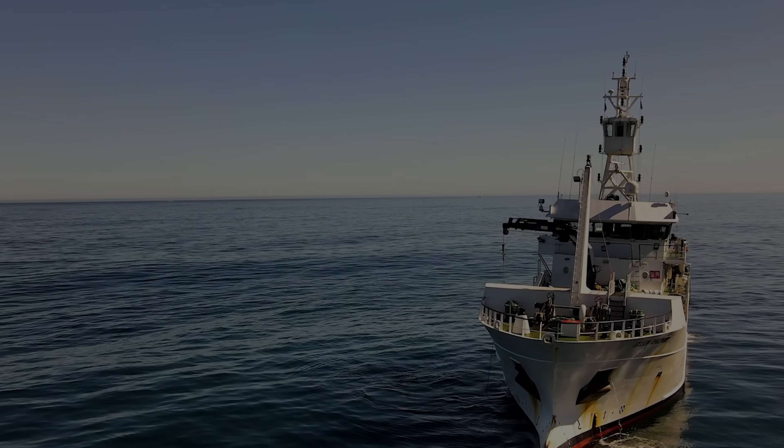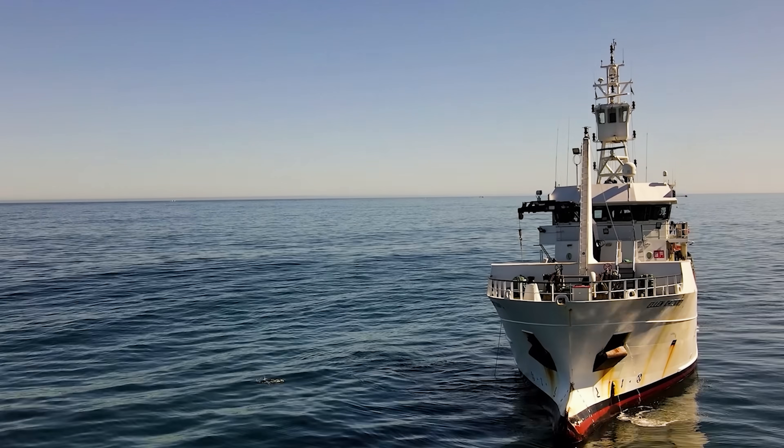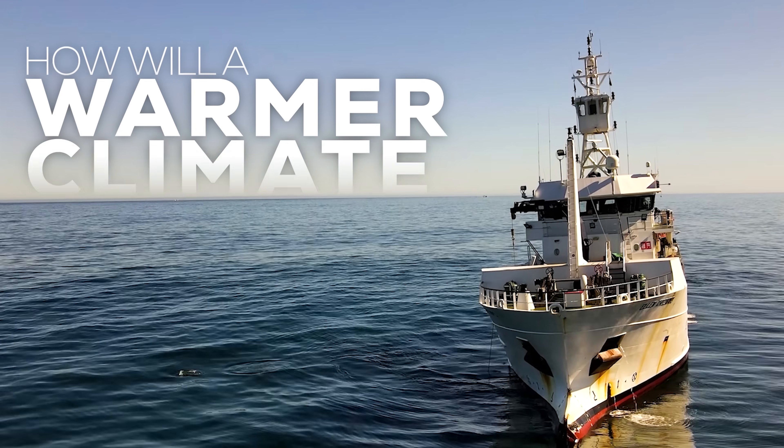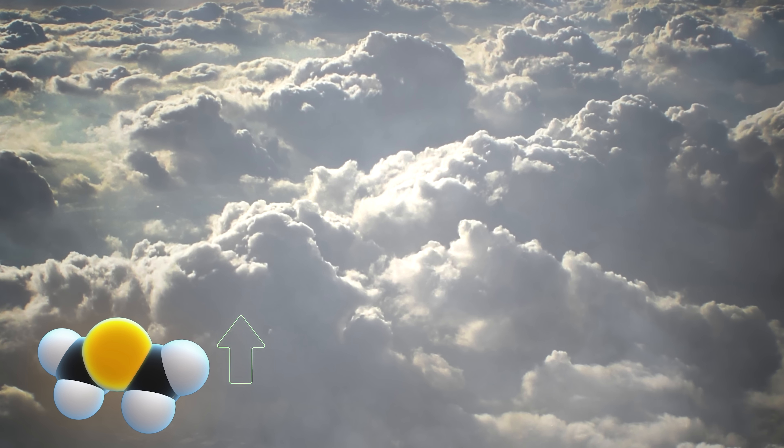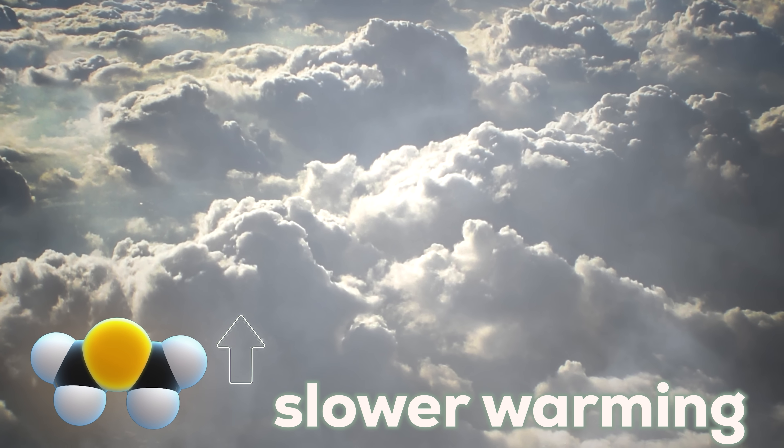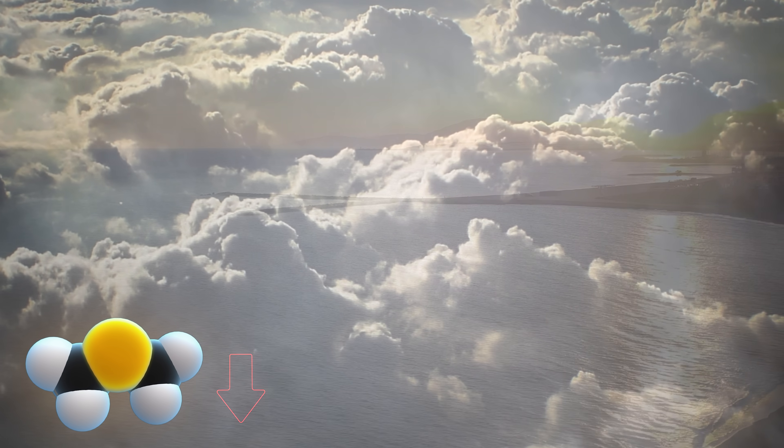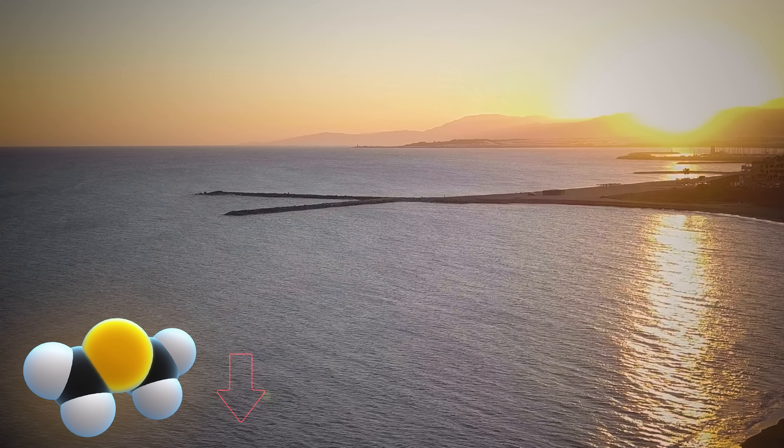But let's take things back to climate change. The main question puzzling researchers now is how will a warmer climate change DMS levels? Will it make DMS increase, meaning more clouds and slowing the rate of warming? Or will it make DMS decrease, meaning fewer clouds and faster warming?